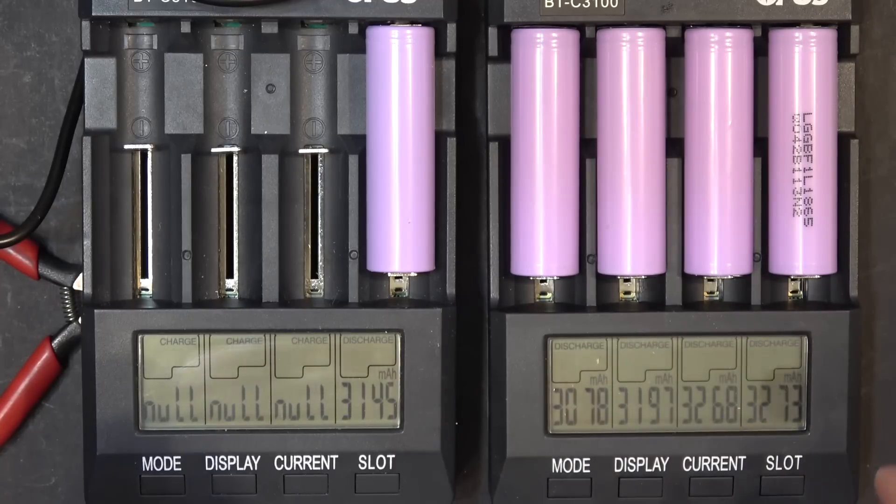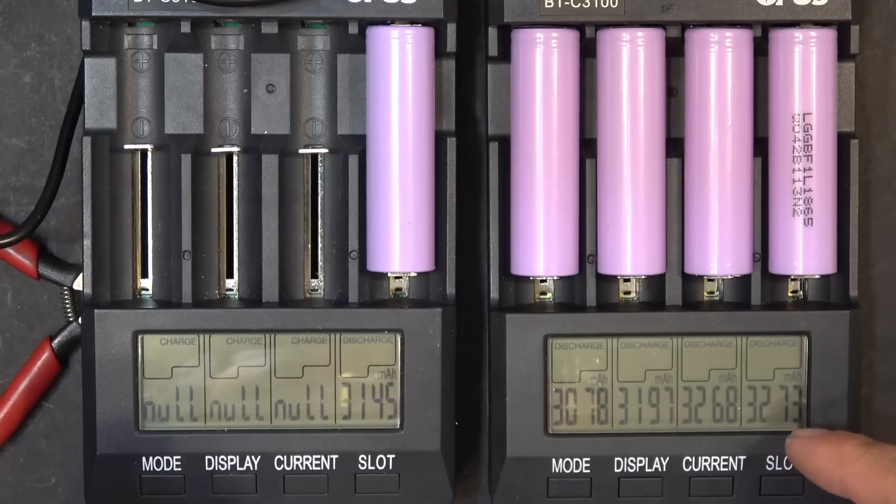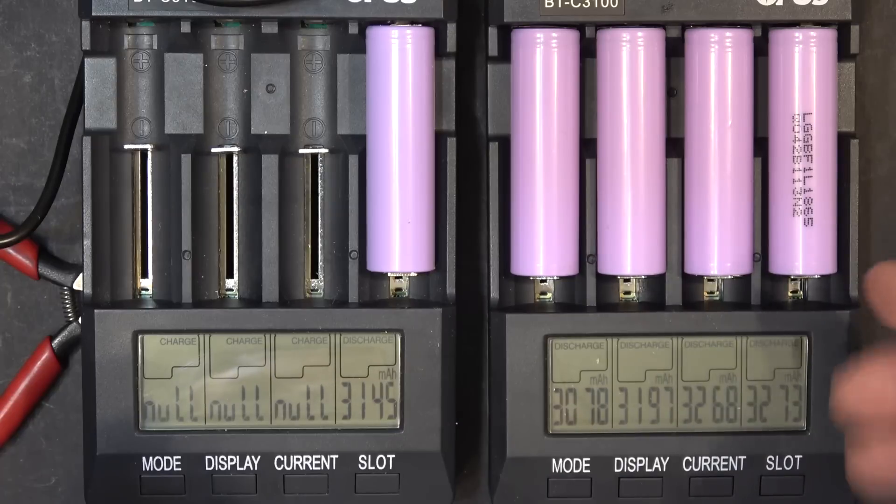Or to be safe, I can just run them at 700 milliamp like this one here. I can get the full capacity out of it, and it's still faster than the 500 milliamp discharge rate.